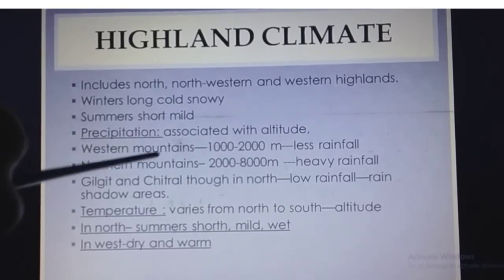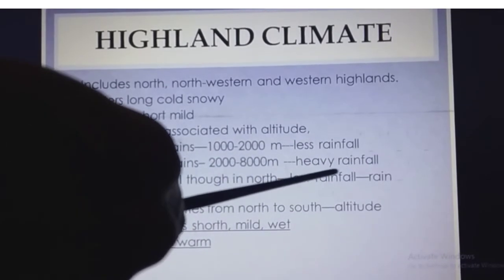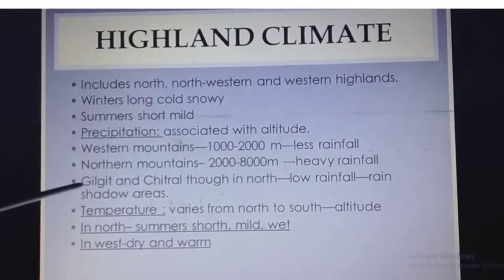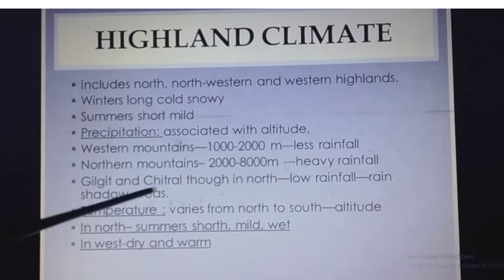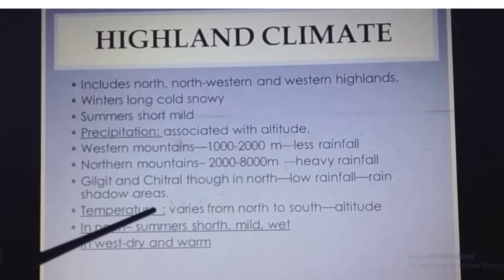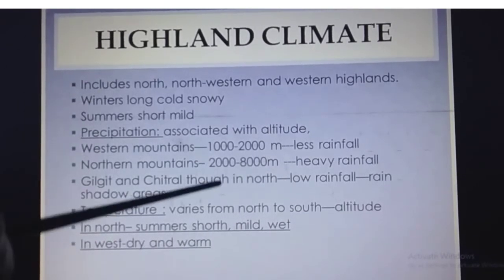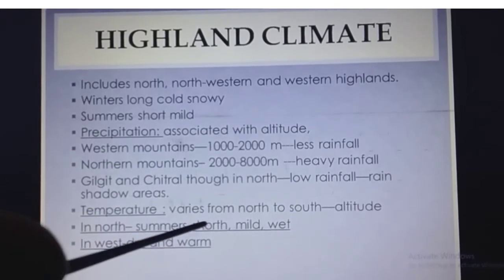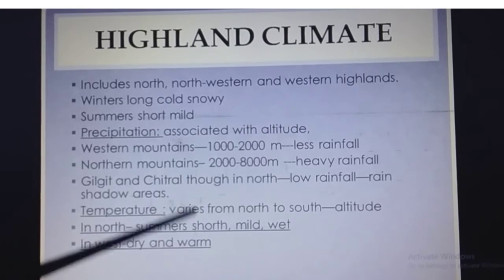Northern mountains are higher in altitude compared to the western mountains, so there is more rain there. Gilgit and Chitral, though in the north, experience low rainfall. This is a commonly asked exam question: it is because they lie in rain shadow areas. Regarding temperature in the highland climate, it varies from north to south depending upon altitude — towards the north it will be cooler, towards the south warmer. In the north, summers are short, mild, and wet; in the west they are dry and warm.